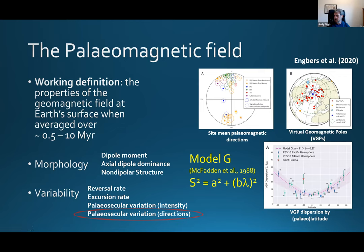This can be reasonably well described by a simple quadratic relationship, which we call Model G. This has just two parameters: A, which defines the VGP dispersion at the equator, and B, which defines the dependency of the VGP dispersion on latitude. It's really this A parameter that's the key one here — the VGP dispersion at the equator or the paleo-equator.